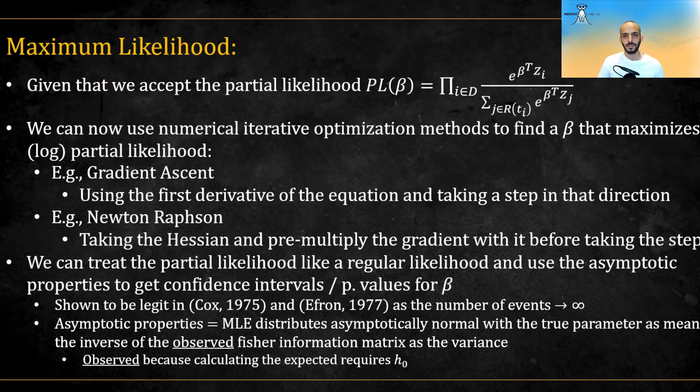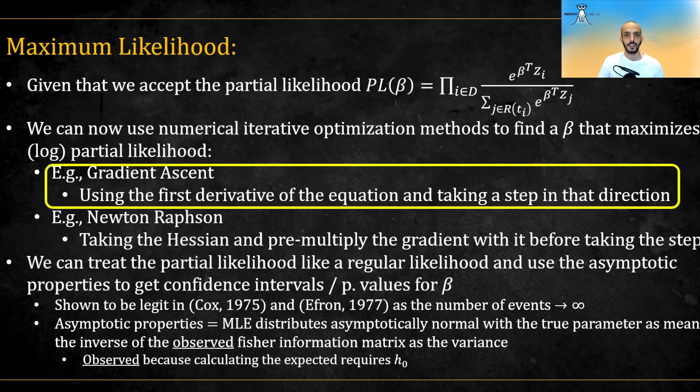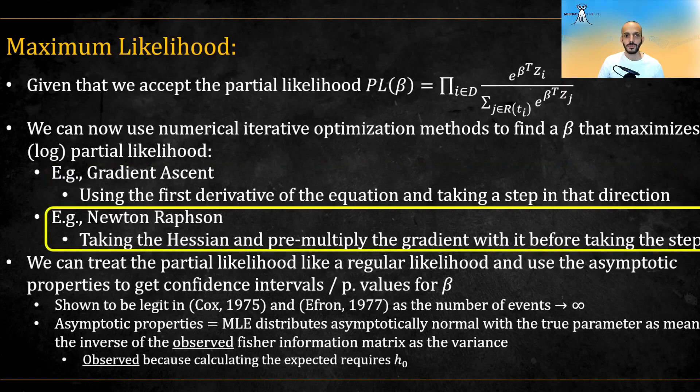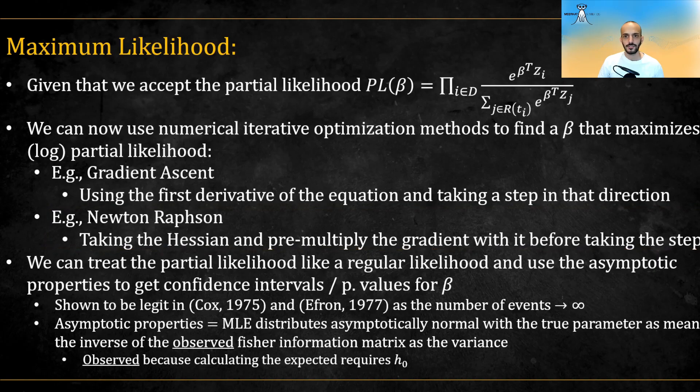We can optimize the partial likelihood as our objective with regards to the betas, either using a first-order method like gradient descent or a second-order method like Newton-Raphson. If we treat the partial likelihood like a regular likelihood, we can also get confidence intervals and p-values for the betas. This has been shown to be legit as the number of events goes to infinity. That is, our MLE estimator is normally distributed with the true parameter as its mean.